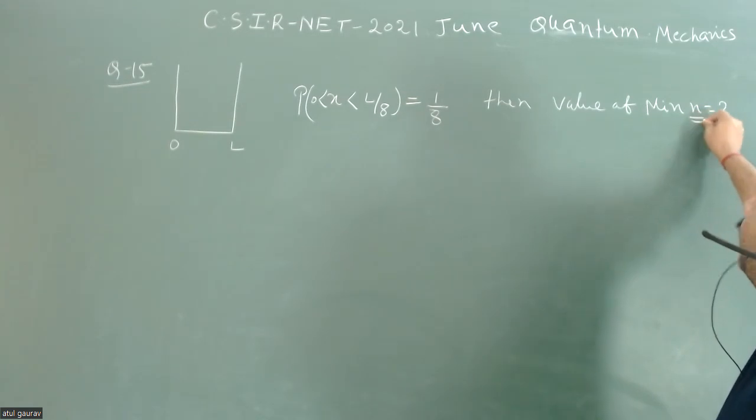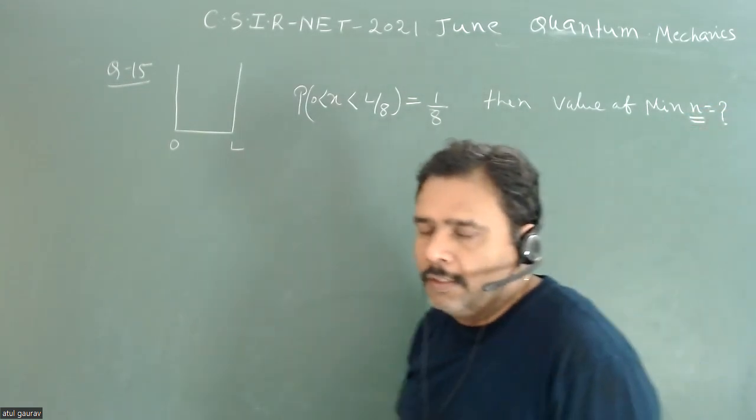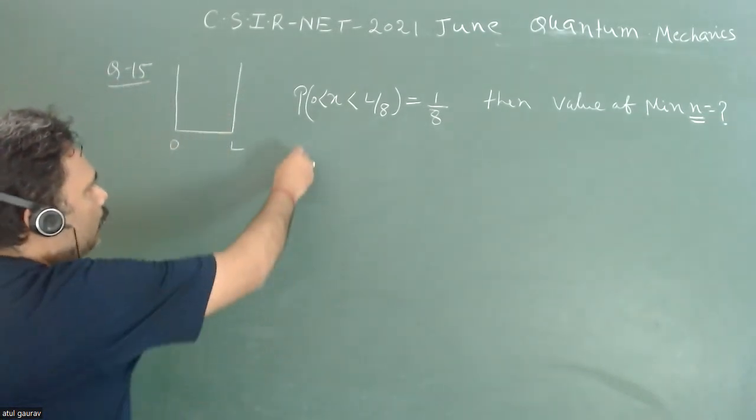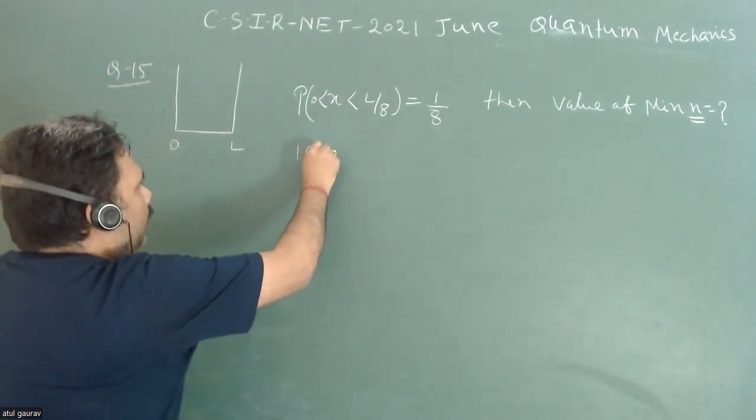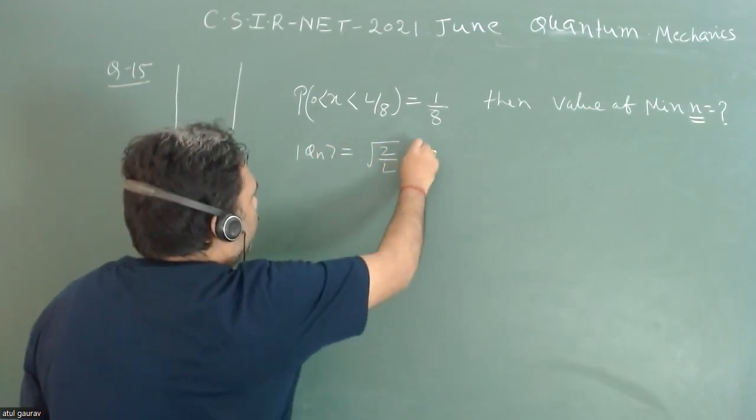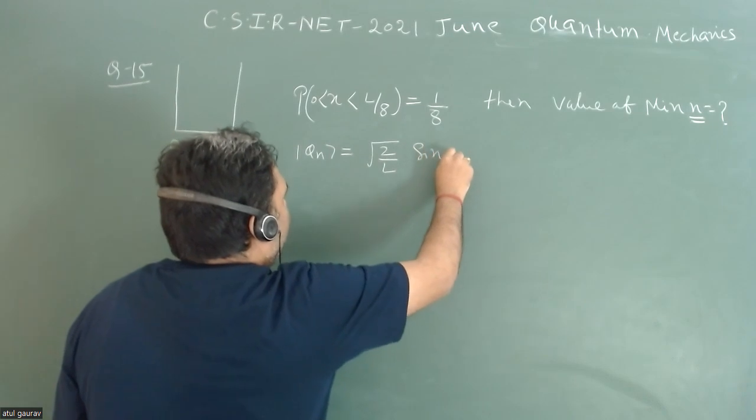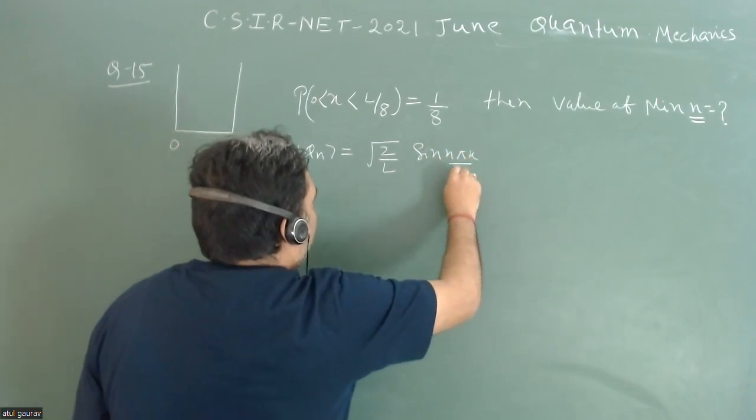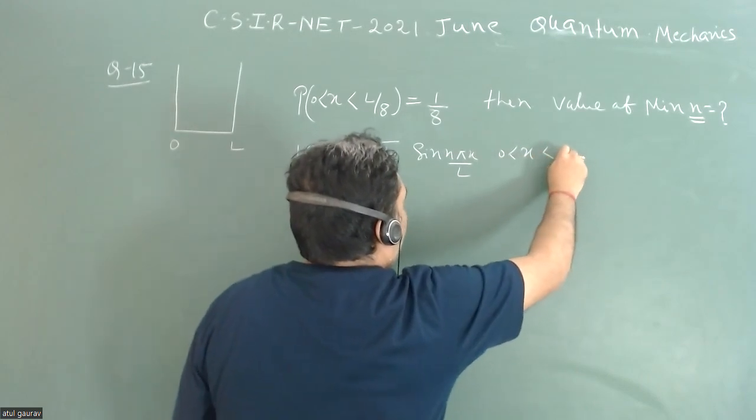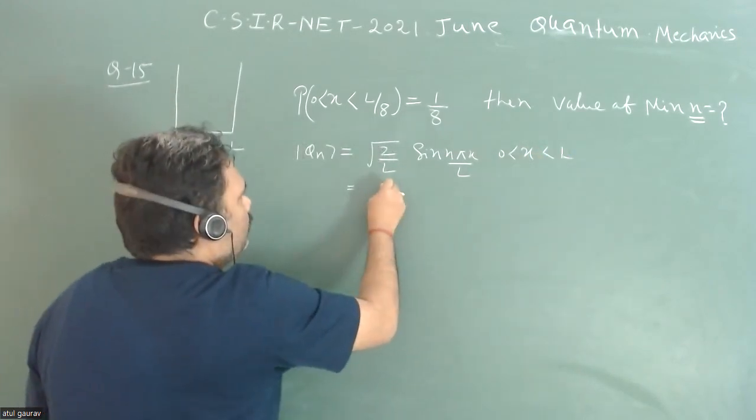What we have is phi_n, the energy eigenstate, and this value is equal to sqrt(2/L) times sin(n*pi*x/L), and this x is between 0 to L and zero otherwise.